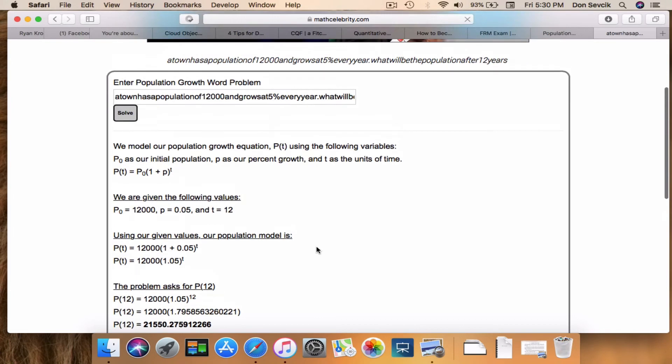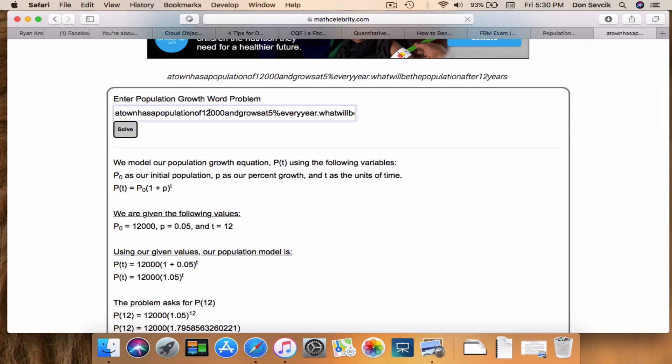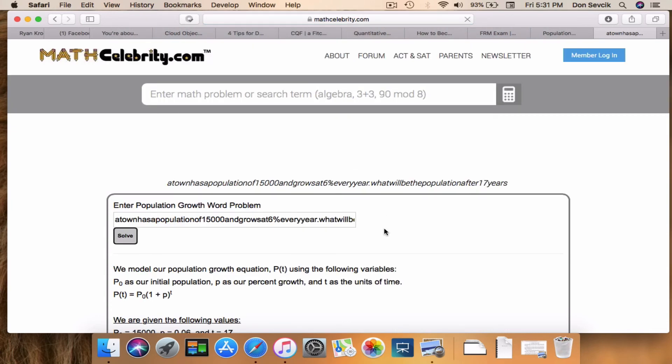Now here's what's fun about this. Let's say your next problem asks you for initial population of 15,000, a growth rate of 6%, and what's the population going to be in 17 years? You don't have to type it exactly like this. I'm just giving you an example. You're going to hit solve, and it's going to recalculate based on your new inputs.